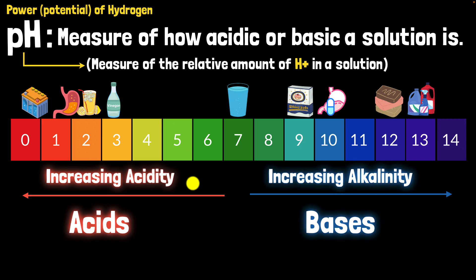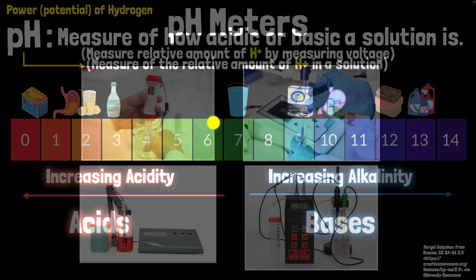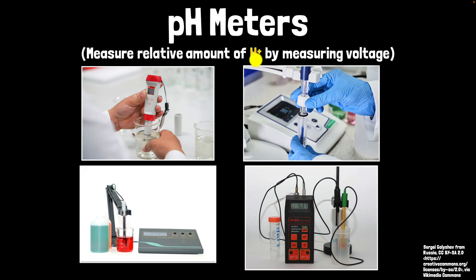We understand what pH is, but how do we measure it? Well, one of the ways to do that is by using something called the pH meters, which are very similar to conductory testers. But instead of just testing for the presence of any ion, pH meters specifically measure the relative amount of H plus ions by directly measuring the voltage. So these are the most accurate devices. You'll actually get a number. You'll know exactly what the pH is. But the problem is they're quite expensive.